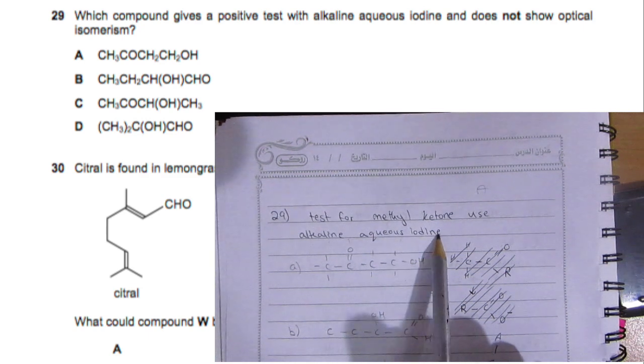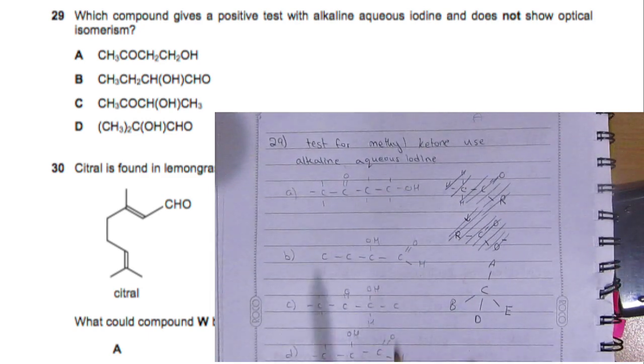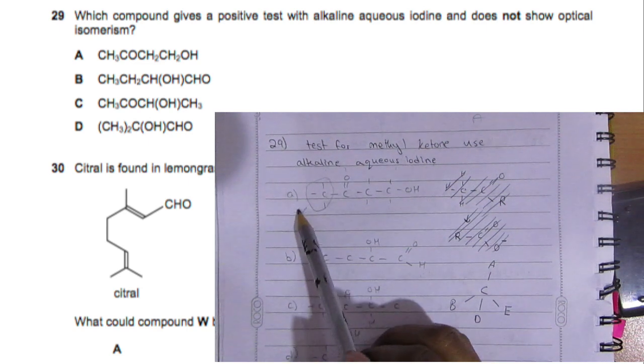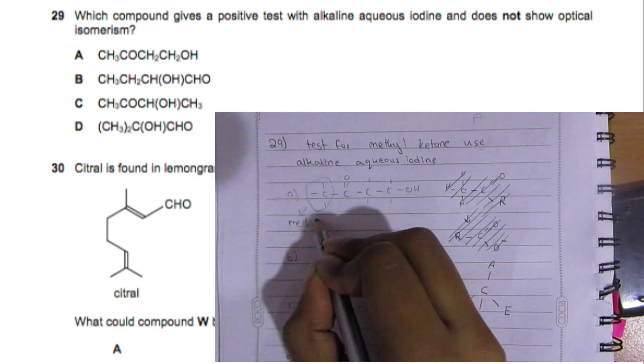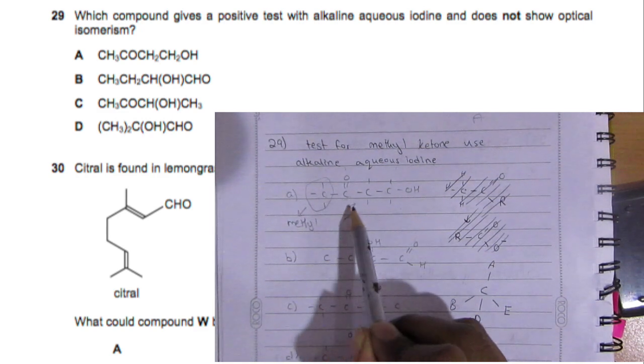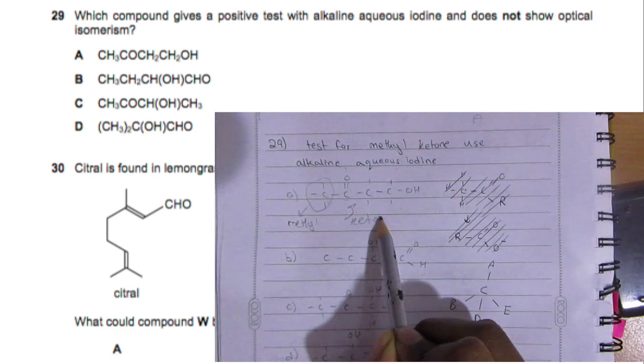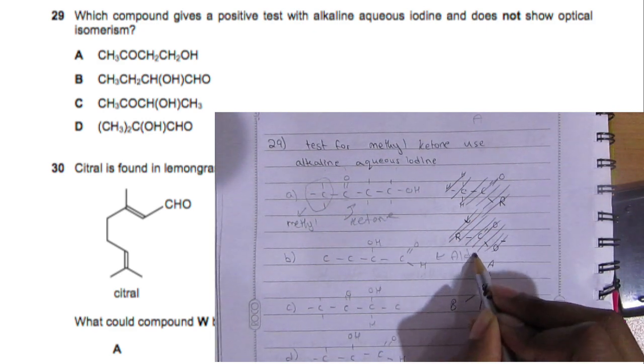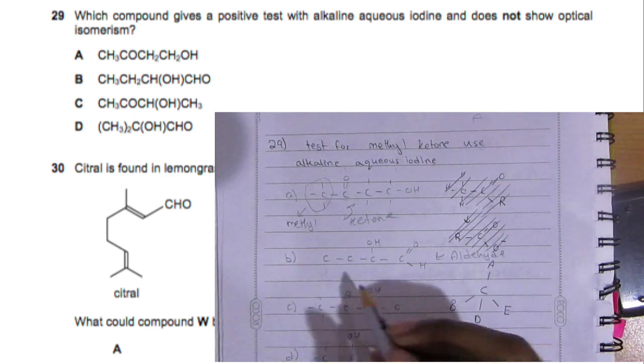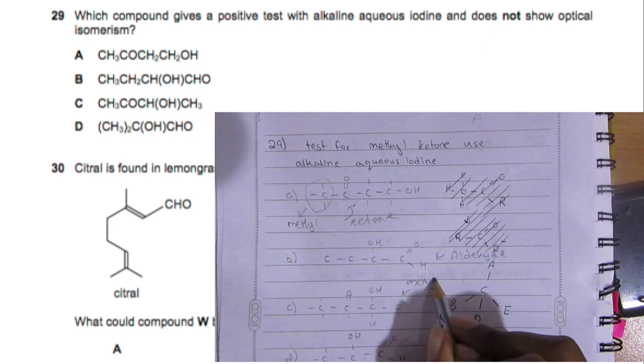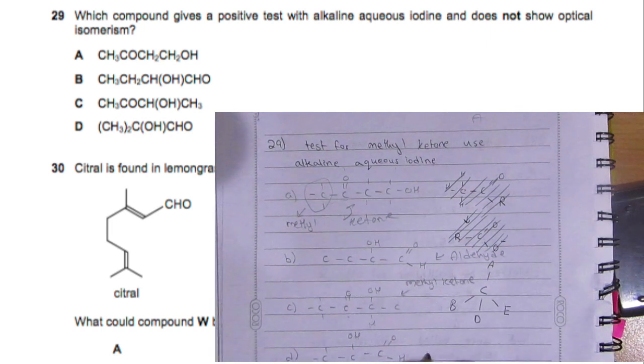Now for question 29, the test for methyl ketone uses alkaline aqueous iodine. So this is a methyl ketone because you have methyl, methyl, and then here's a ketone. This is a ketone. This is an aldehyde, this is an aldehyde, this is a methyl ketone, and this is an aldehyde.